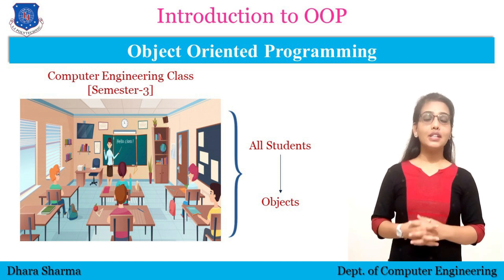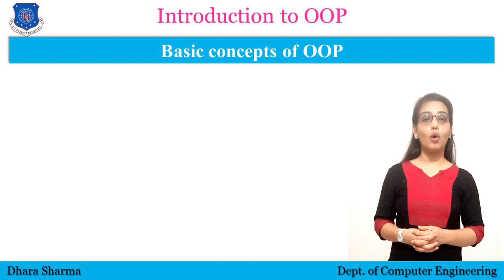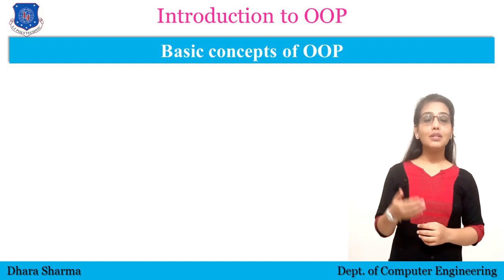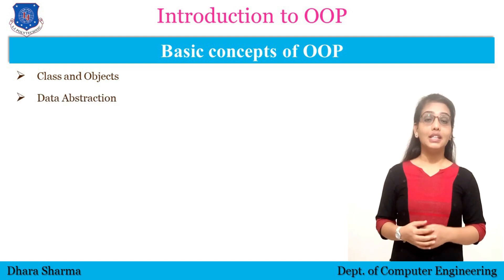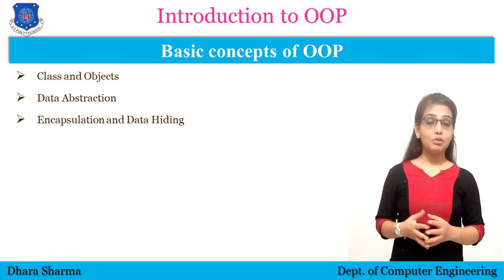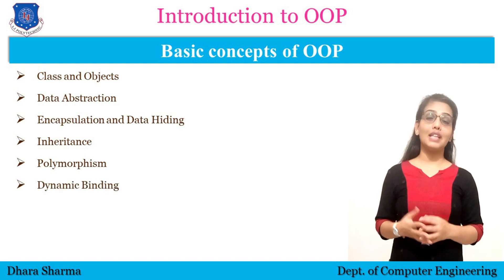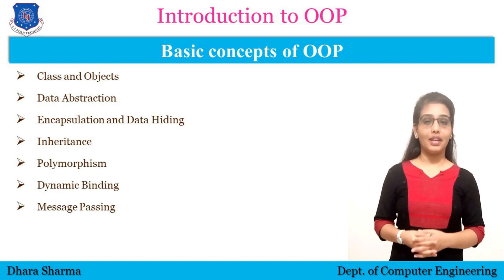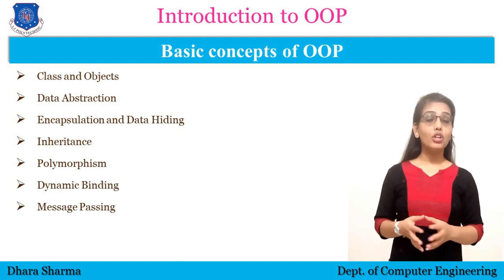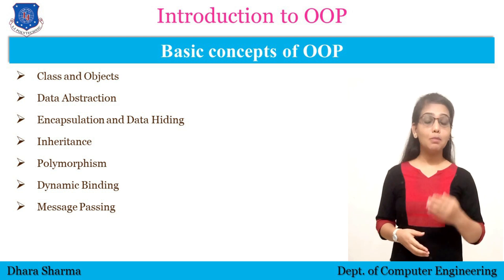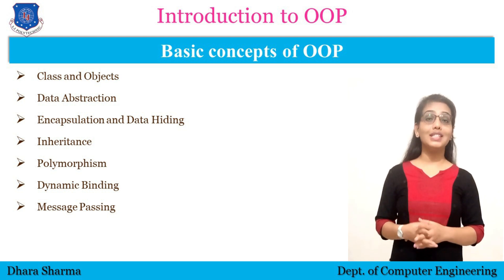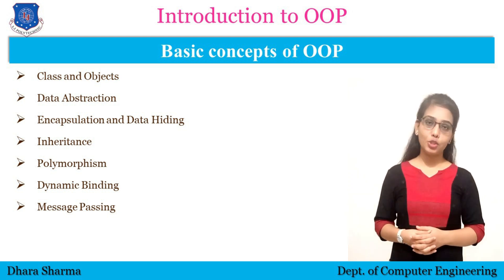Now let's understand some basic concepts of object-oriented programming language. Here are some basic concepts: class, object, data abstraction, data encapsulation, inheritance, polymorphism, dynamic binding, and message passing. Any programming language that supports these basic features can be considered an object-oriented programming language.